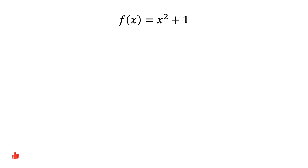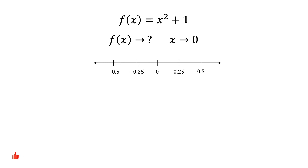Let me give you an example. Suppose f of x equals x squared plus 1. What value will f of x approach to when x approaches 0? Before we answer this question, it is worth noting that there are two directions in which we can approach 0. We can start from the left of 0, or from the right of 0.